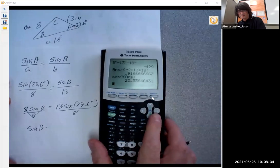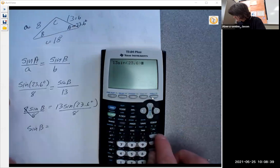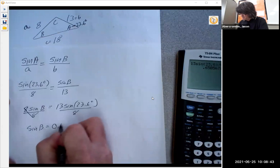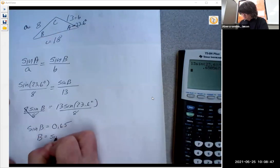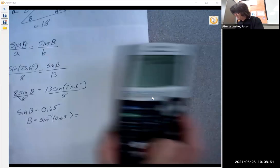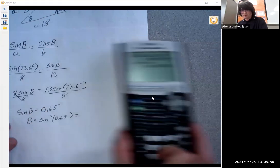Let's figure out what that is. 13 sine of 23.6 divided by 8. It's 0.65, and then B is the inverse sine of 0.65. So we're going to do inverse sine of that, and it's 40.6 degrees.